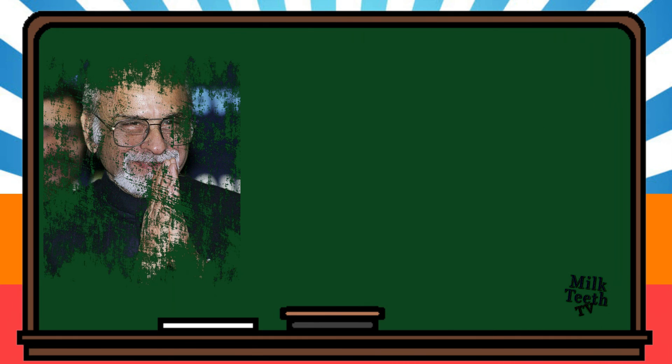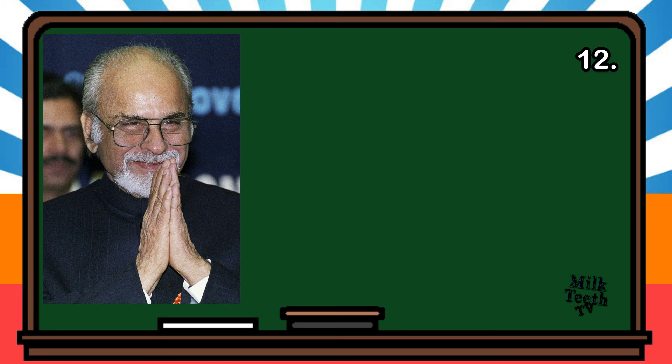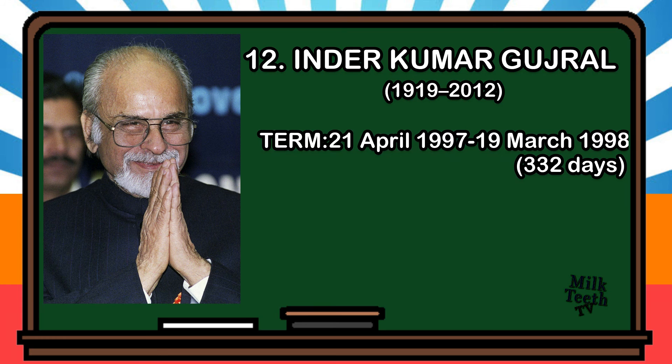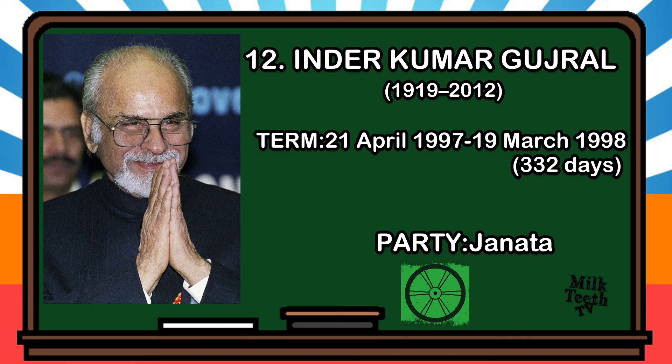The twelfth Prime Minister of India was Inder Kumar Gujral. He was born in 1919. His term began on 21st April 1997 and lasted till 19th March 1998, for a period of 332 days. Party: Janata Dal.